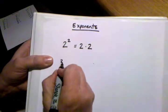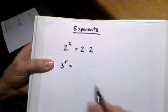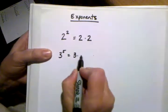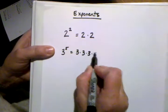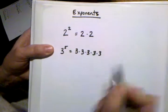If I were to write, for example, 3 to the fifth power, all that's telling me is I'm multiplying 3 five times. So 1, 2, 3, 4, 5.